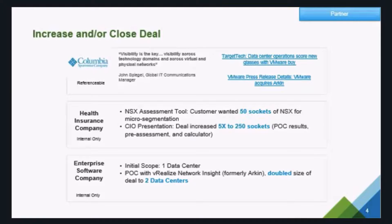Columbia Sportswear is a great reference — they're using NSX along with VRNI. A health insurance company, before the assessment, was looking for 50 CPU licenses of NSX. After the assessment and CIO presentation, they decided to increase fivefold to 250 CPU licenses. Another customer looking at virtualizing one single data center, after a proof of concept with VRNI, saw the need and features it provided and decided to double the size of the deal to two data centers.